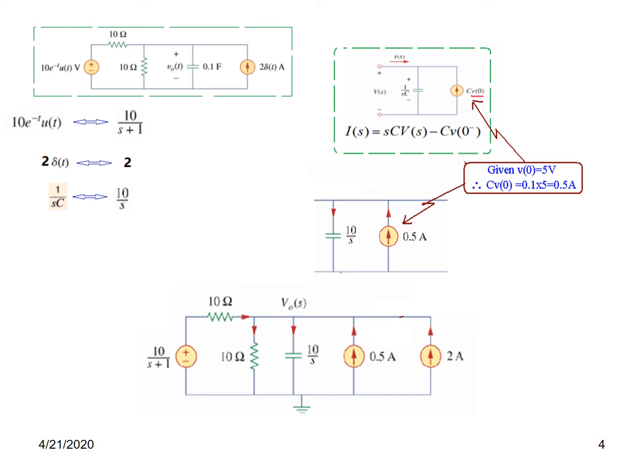The voltage source is transformed, the resistor is unchanged, the capacitor is transformed with its parallel impedance 10/s and current source 0.5 A, and the current source 2 is transformed. This is the complete s-domain representation of the circuit. We need to find v_naught, which is the voltage at this node with respect to ground.